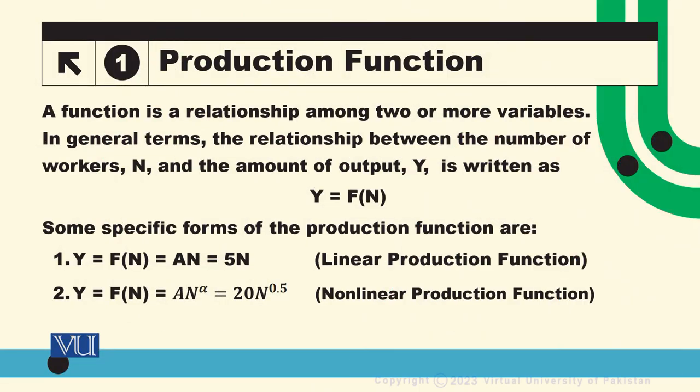So far, aap yeh jaan chukhe hongge ke function is basically a relationship among different variables and obviously production function is a relationship between output and the factors of production. Aaj hum eek bhaot ee simple production function ki baat kertae ke output is a function of labour. So mathematically hum lakhen ke y is a function of n. So it means that output depends on units of labour.